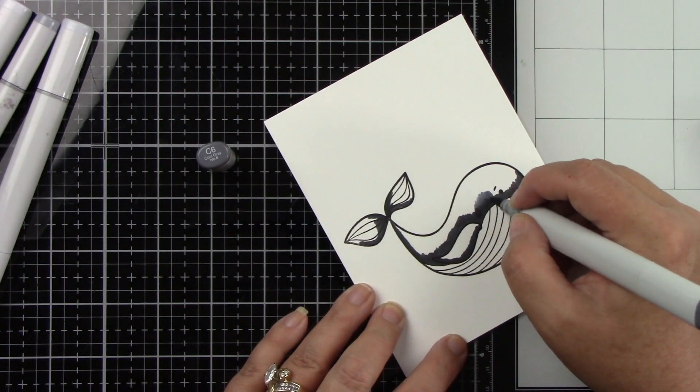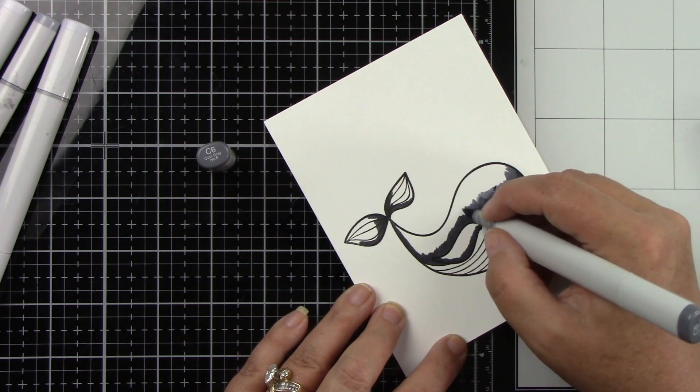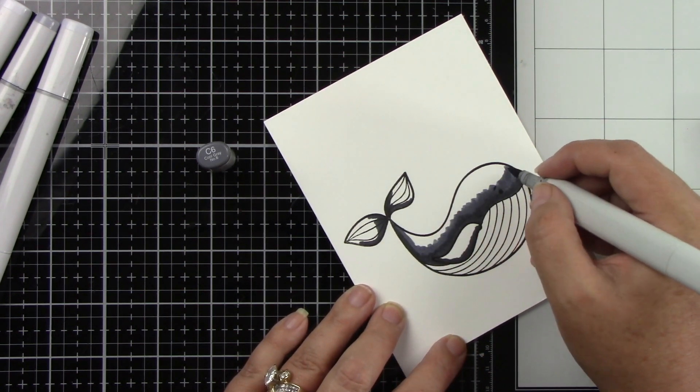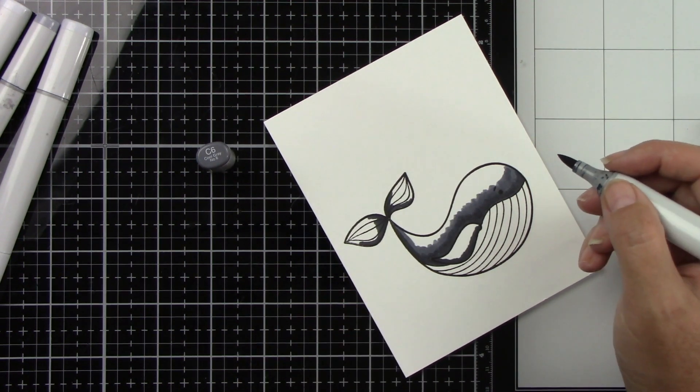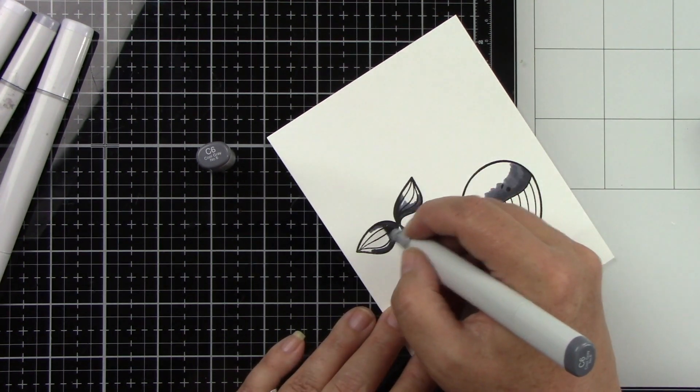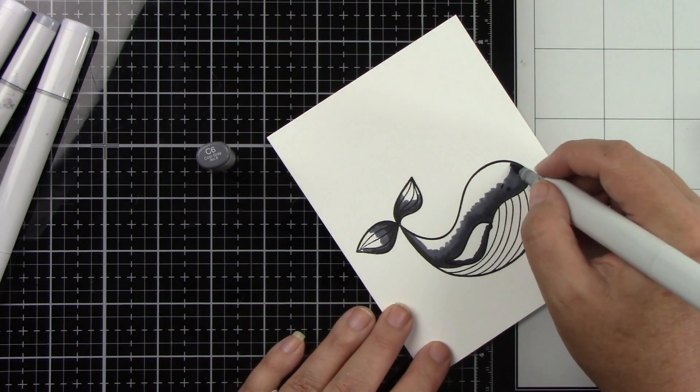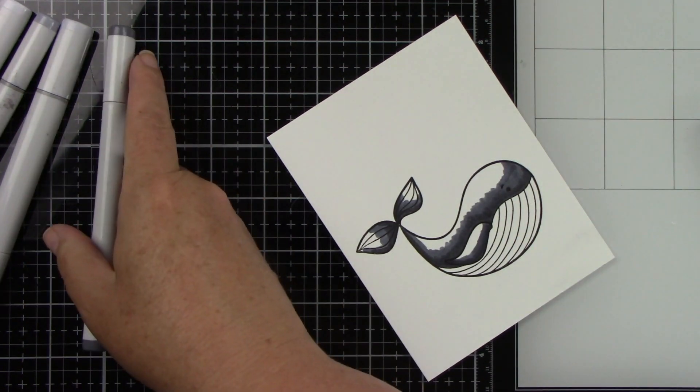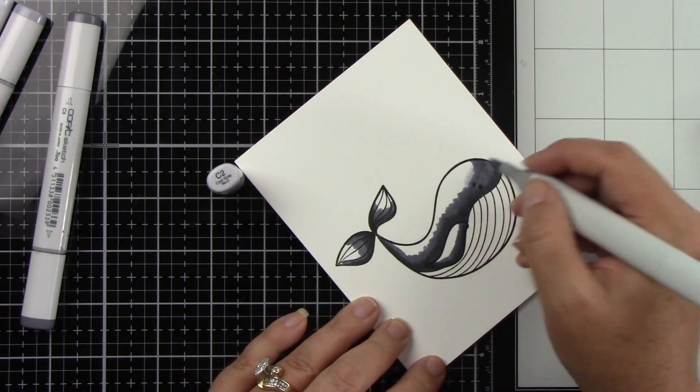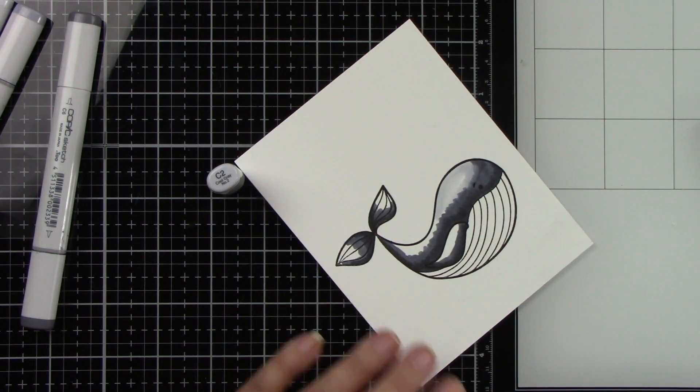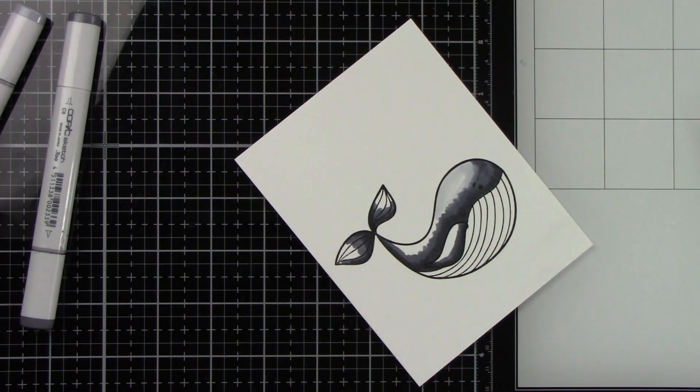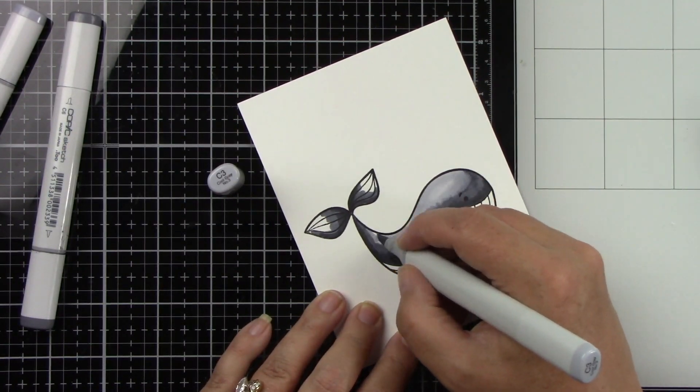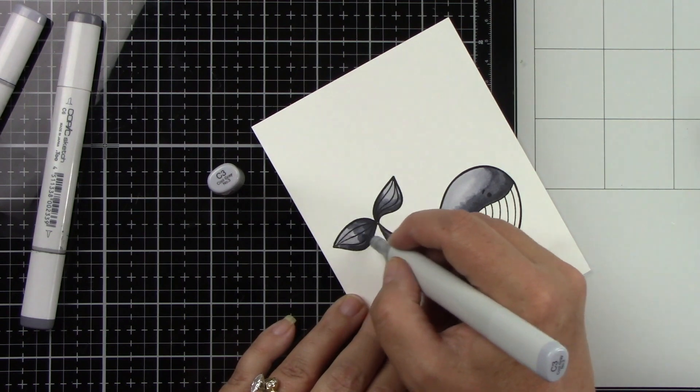I am coloring this super cute whale and I will have to say I think coloring whales lately are one of my most favorite things to color along with lemons. But this guy is so cute. I'm using C4, 6, and 8 I believe on the top part of this whale.